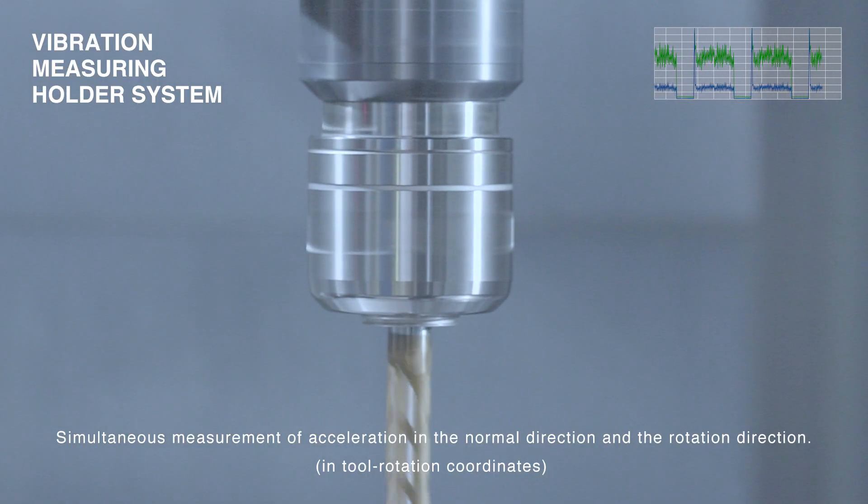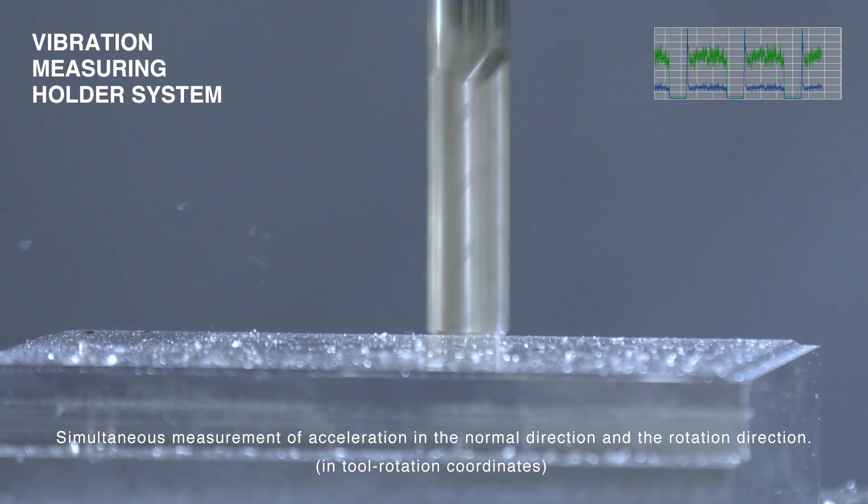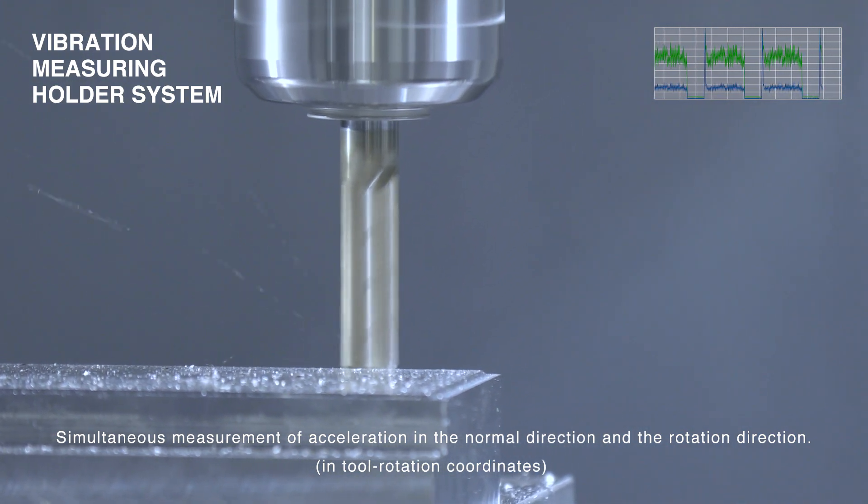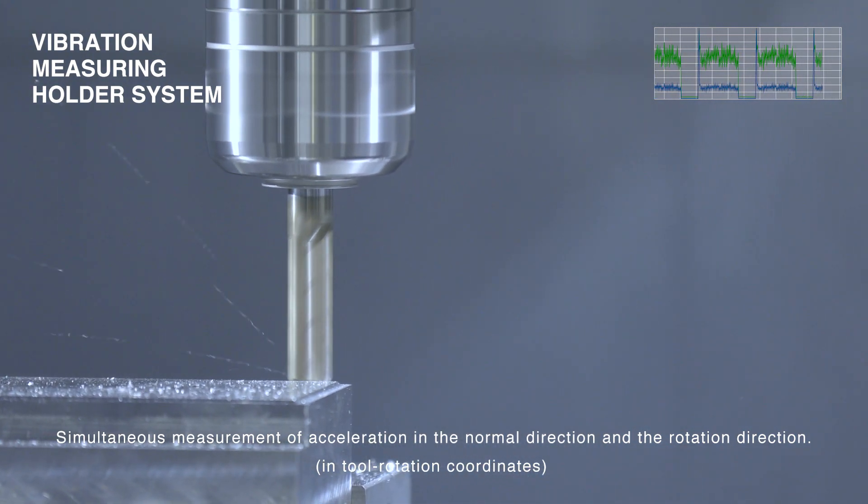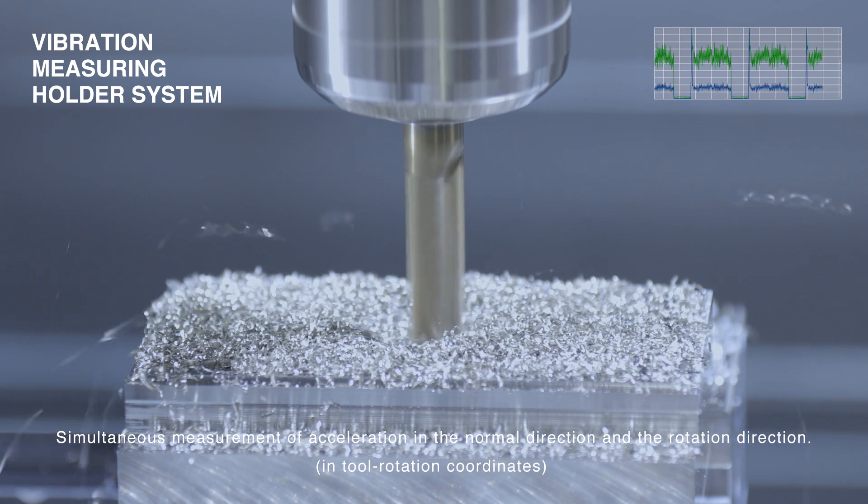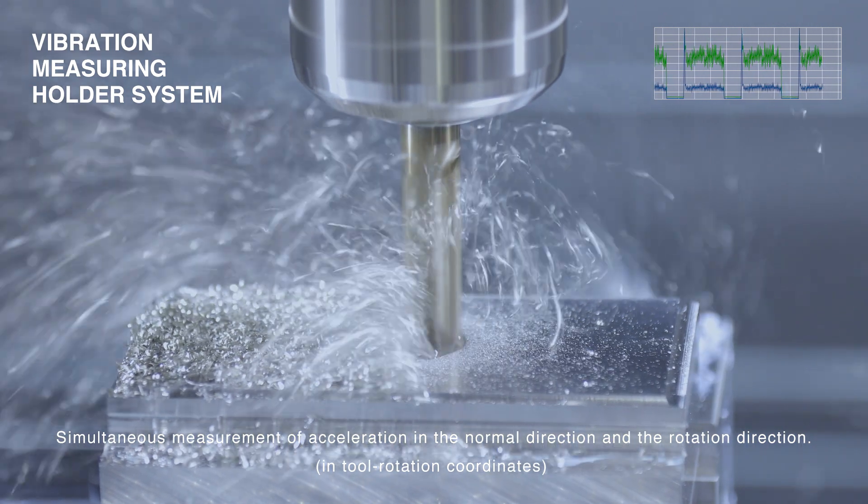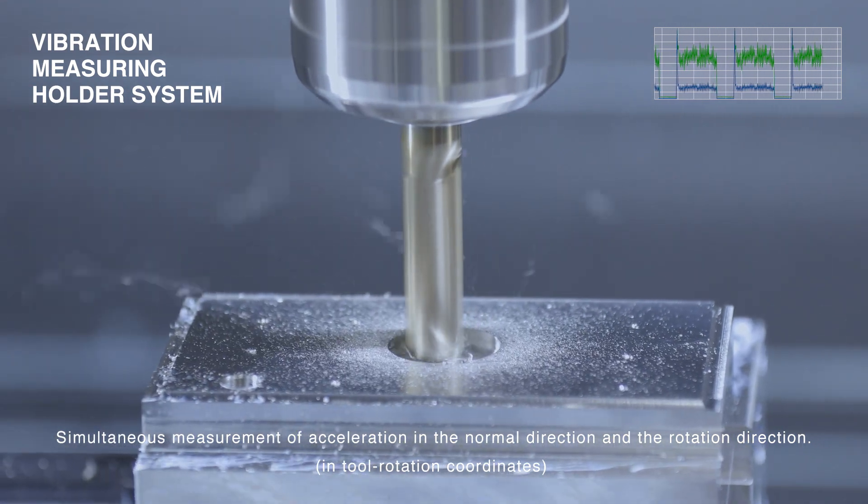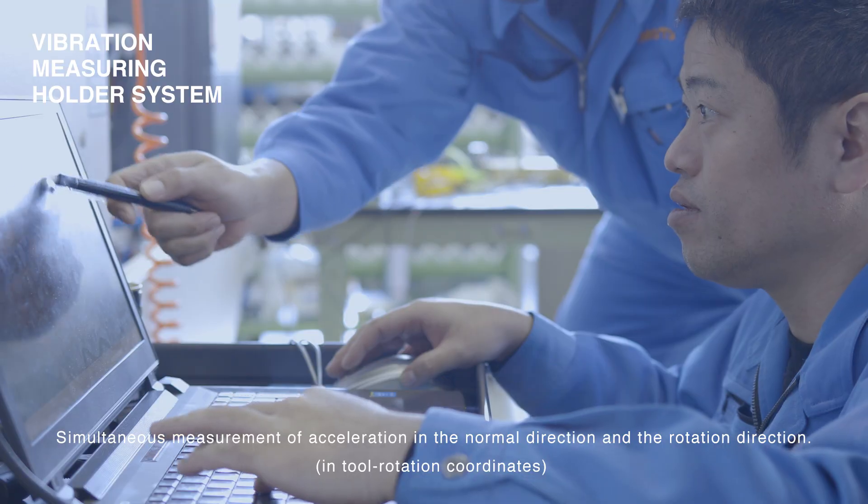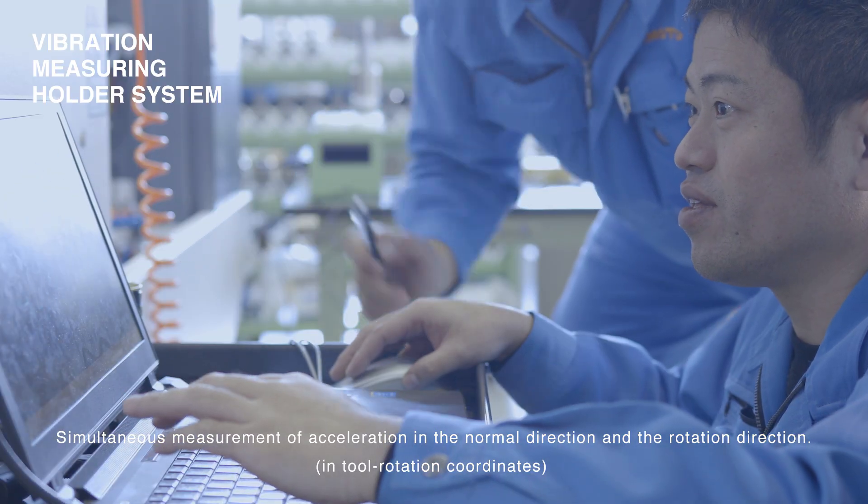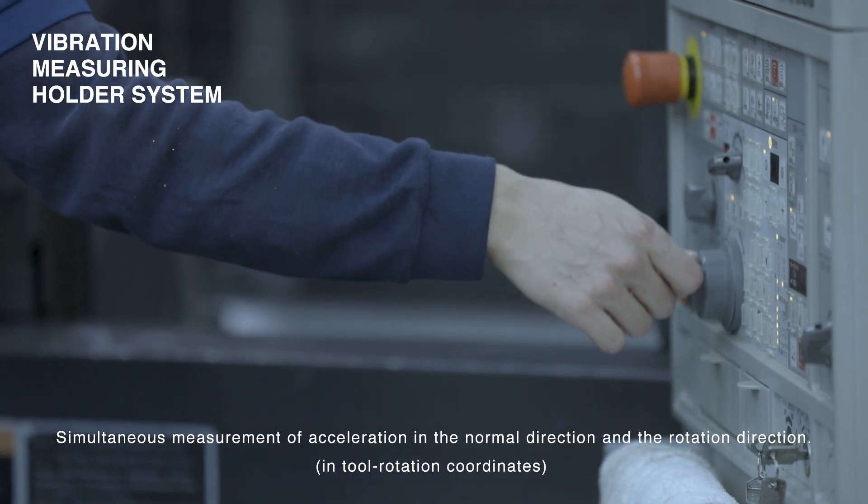The vibration measurement device simultaneously measures acceleration in the normal direction and rotation direction in two rotation coordinates. By allowing vibration evaluation by RMS averaging data processing, it makes it possible to tackle various challenges at the manufacturing site such as failure rate reduction and traceability.